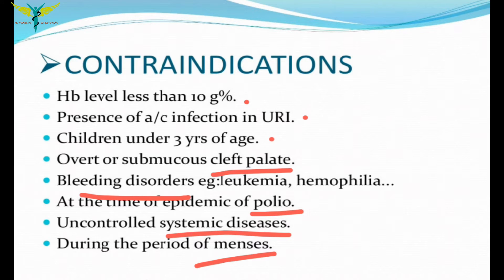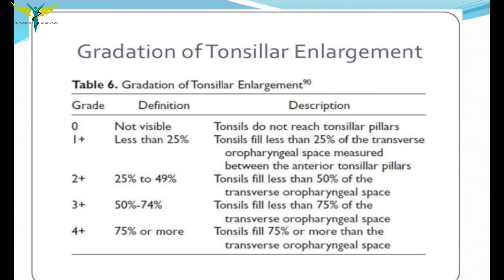Additional contraindications include: during an epidemic of polio, uncontrolled systemic diseases, and when a female patient is menstruating. Before doing tonsillectomy, the enlargement of the tonsil is graded — usually into four grades.